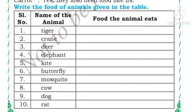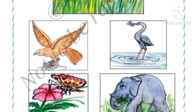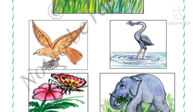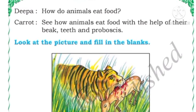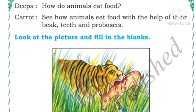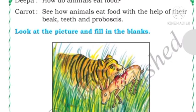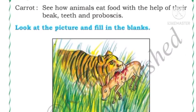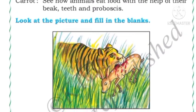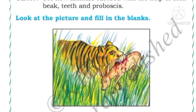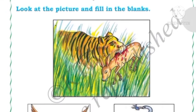Deepa is asking: how do these animals eat food? Carrot says animals eat food with the help of their beak, teeth, and proboscis. Proboscis is a tube-like organ which is present on insects. Now look at the pictures and fill in the blanks.